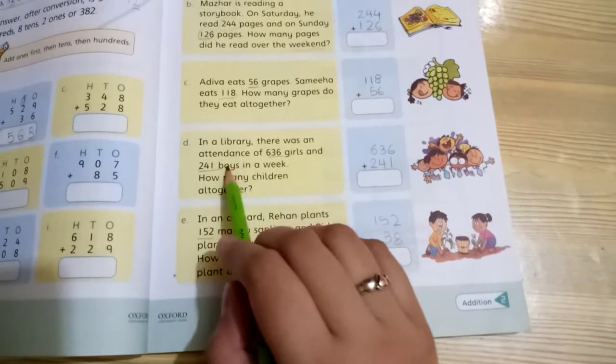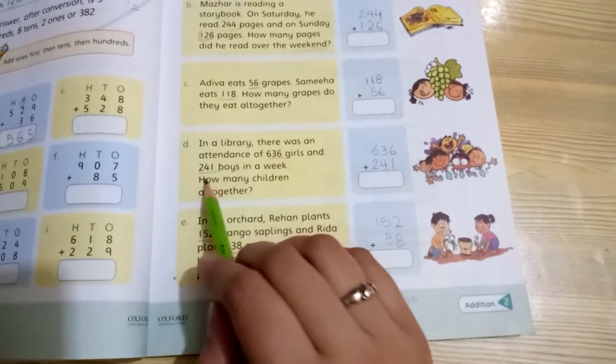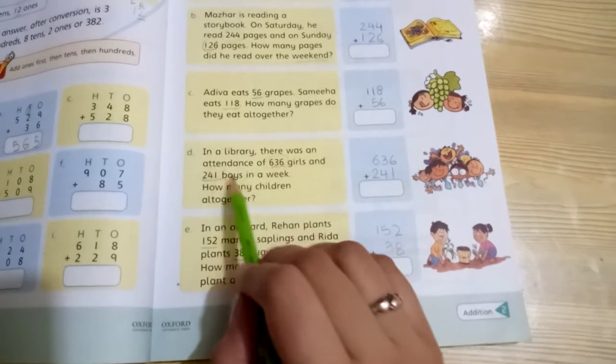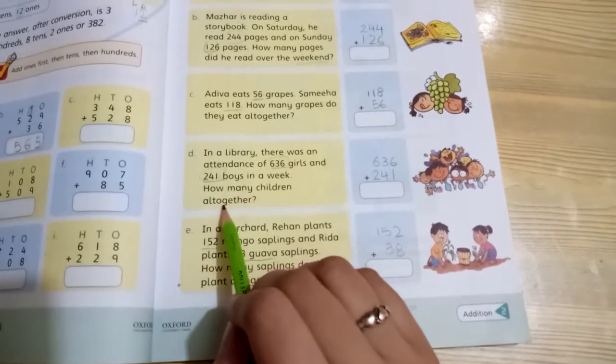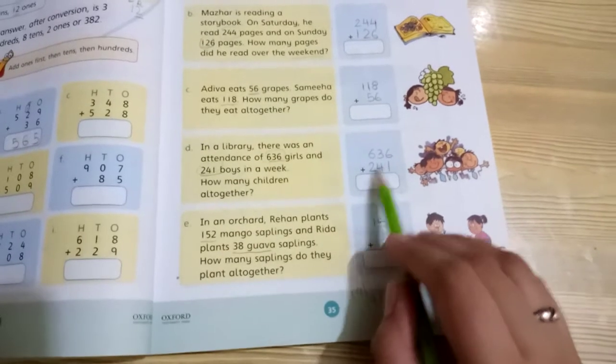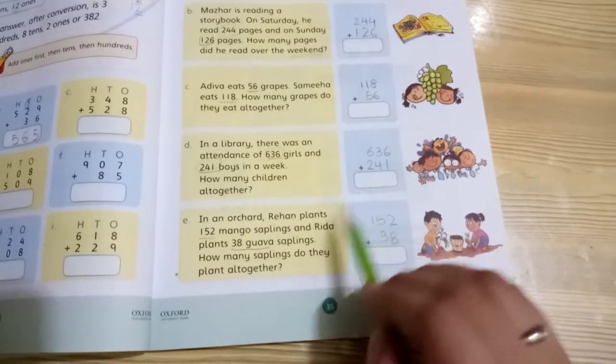In a library, there was an attendance of 636 girls and 241 boys in a week. So many girls and boys were present. Their attendance. So total children in that week? Add both: 636 and 241, and you'll get the answer.